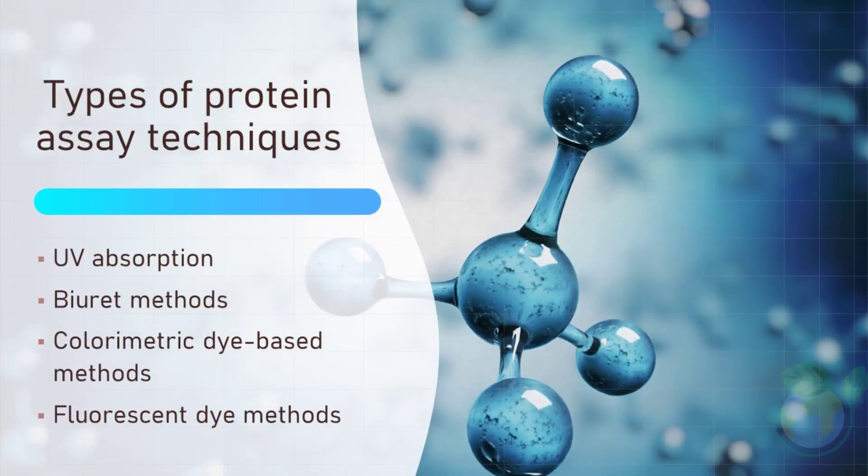Types of Protein Assay Techniques. Let us explain the four common types of protein assay techniques. They are UV absorption, biuret methods, colorimetric dye-based methods, and fluorescent dye methods.